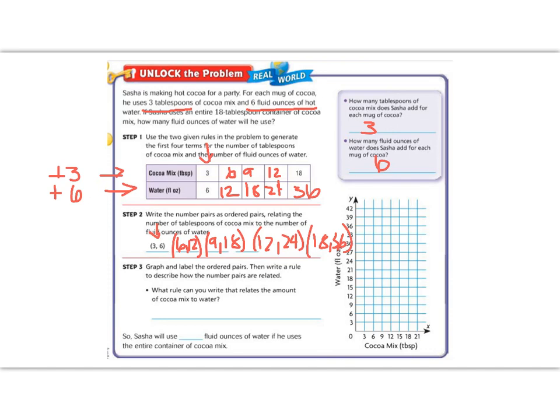Now we're going to graph these ordered pairs and find a relationship. So let's start with our first one of three, six. So I'm going to start at the origin, go over three and up six. And then our next one is six, twelve. So start at the origin, over to six, and then up to the twelve.